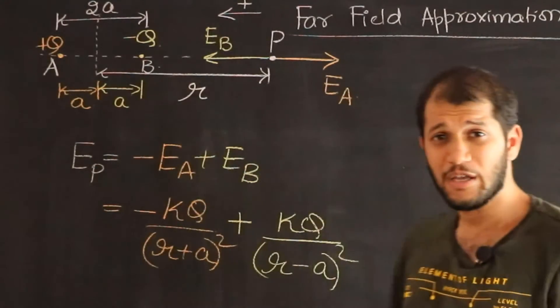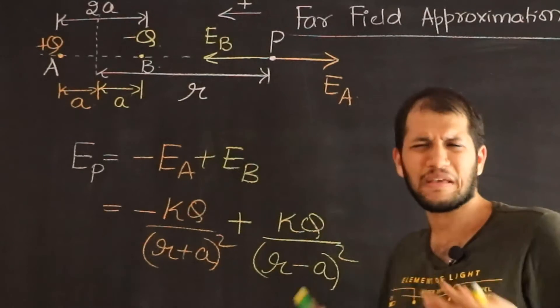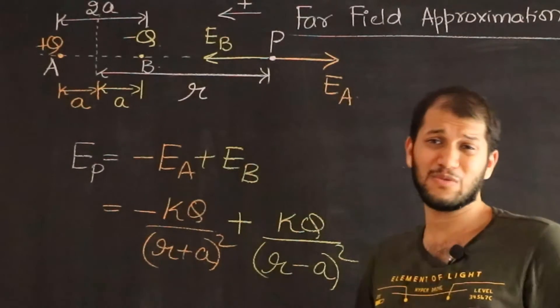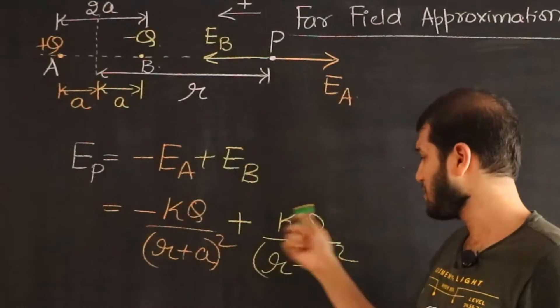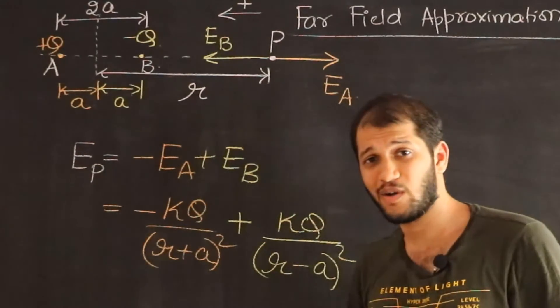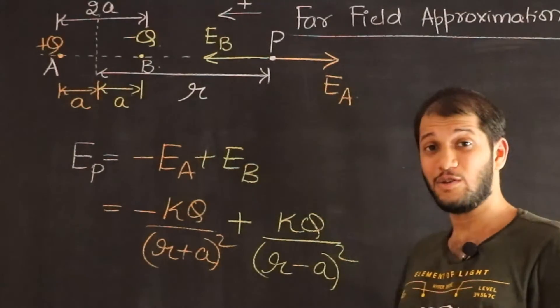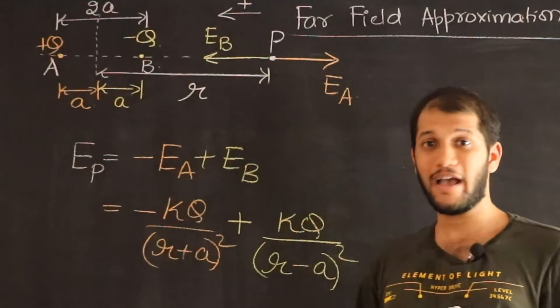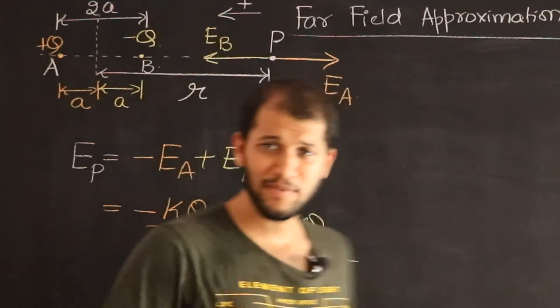If we immediately use the fact that we are far away, and if we say, look, r plus a is same as r, and r minus a is also same as r, if we immediately do that, notice you will get minus kq by r squared plus kq by r squared, and the whole thing goes to zero, and that's where approximation fails. This tells us, I can't use the approximation yet. I have to simplify this a little bit further, and maybe later on I can do that.